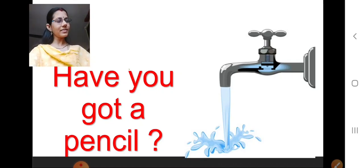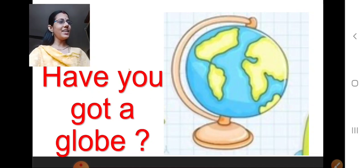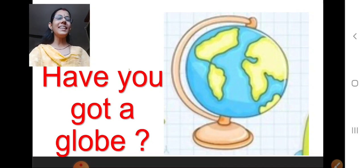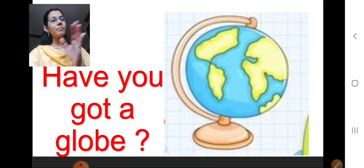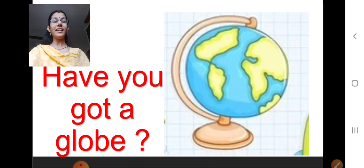Now, what is this picture? Picture of a globe. Yes, you have seen it in our class, right? In GK also. This is a picture of a globe. So if I ask you, children, have you got a globe? Then what will you say? Yes, I have got. As I told you earlier, a sentence can be expressed depending on the question. If I ask, is this a globe? Yes, it is. Have you got a globe? Yes, I have got. The answers may vary depending on the questions. Got it, children?